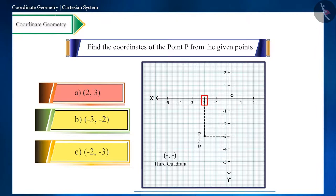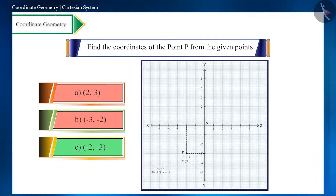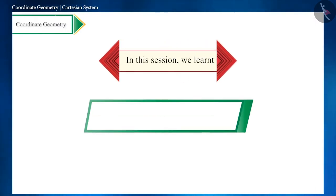We first write the x-coordinate and then the y-coordinate. That is, option C: (-2, -3) is the correct option. So friends, that's all in this session. Today we discussed some facts related to the Cartesian system.